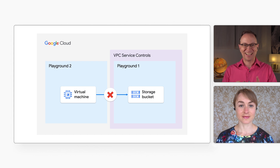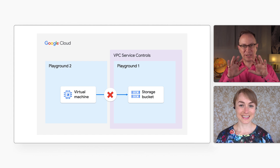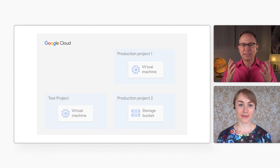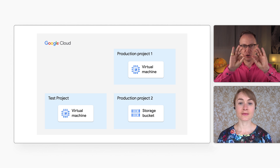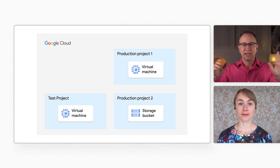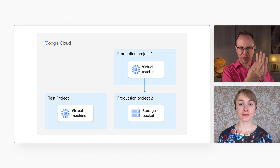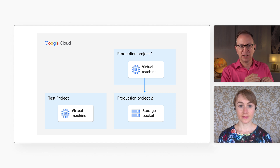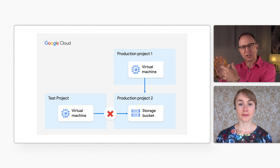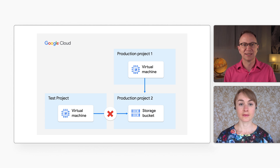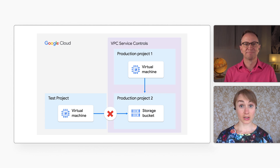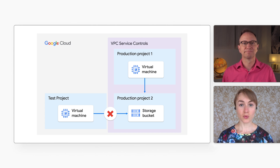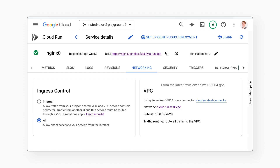I like how VPC Service Controls let me lock down access. But Natalia, what if my production environment is a group of projects? I would want those production environment projects to be able to access each other, but I wouldn't want other projects, like my test environment projects, to be able to access those production projects. Well, VPC Service Controls lets you put multiple projects within a perimeter. Those projects can access each other, but projects outside the perimeter can't.